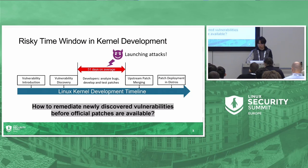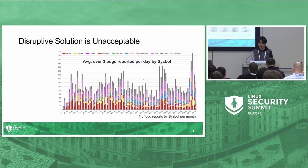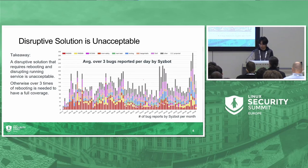Another problem is how to remediate newly discovered vulnerabilities in the risk window before official patches are available. A disruptive solution is not acceptable. The figure on the top right shows the number of bug reports generated by syzbot per month — on average over three bugs are reported daily. Existing sandboxing solutions are disruptive because they require rebooting to deploy, meaning we would need to reboot the system over three times a day, which is unacceptable. Therefore, an on-the-fly solution deployable at runtime is desired.